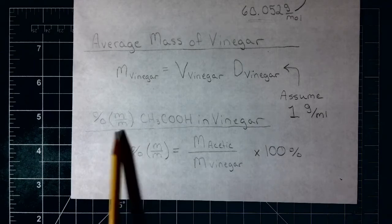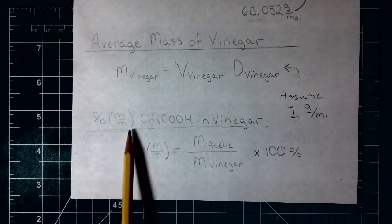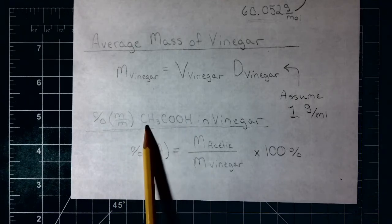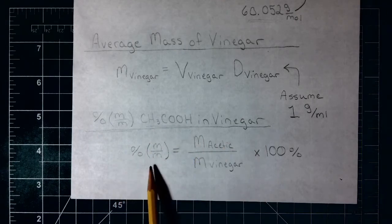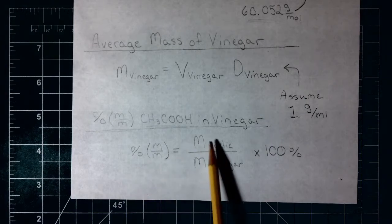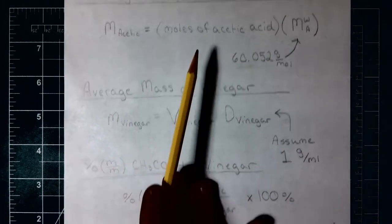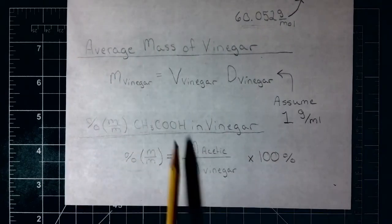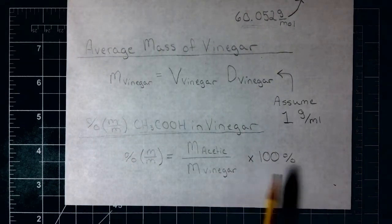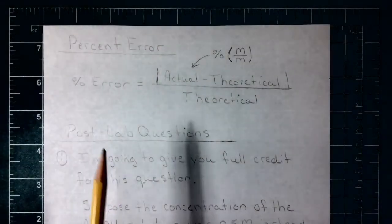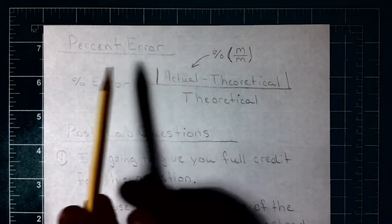Next we're going to calculate a new concentration, but this time we're looking for the mass percent of acetic acid in vinegar. That mass percent is going to be our mass of acetic acid divided by our mass of vinegar, times 100%. We're also going to calculate the percent error for this.